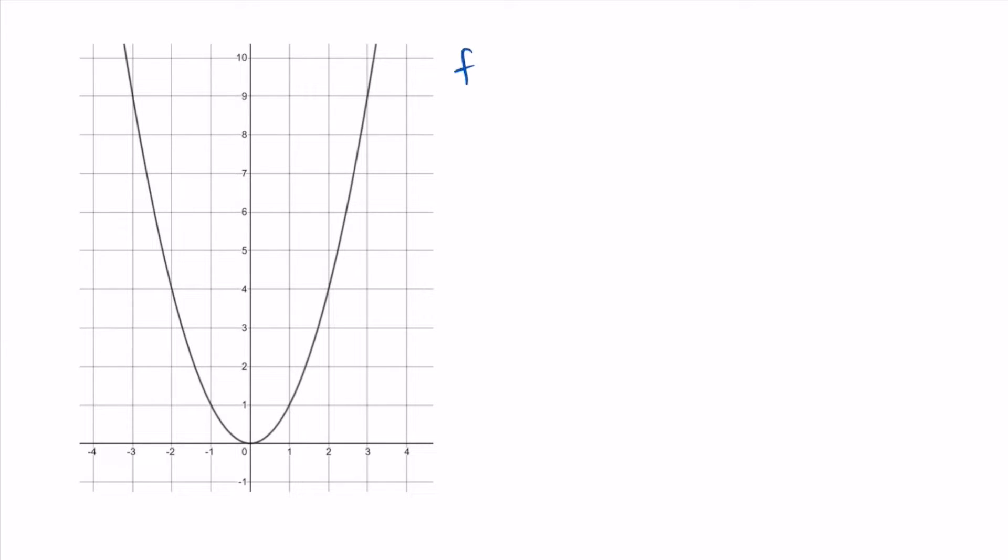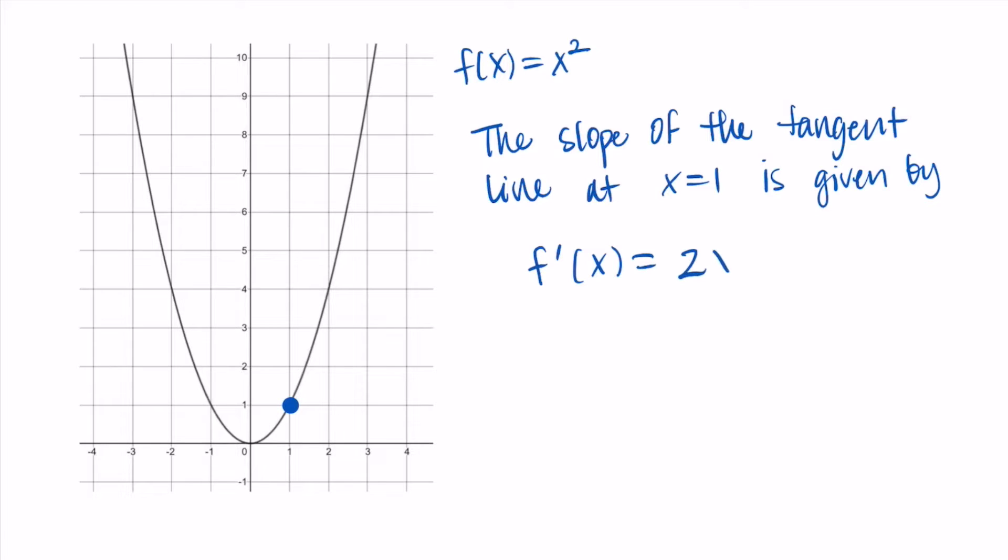Now we're going to return to our example of looking at the graph and trying to find the slope of the tangent line or the derivative at x equals 1. Now that we have the equation of the derivative, we know that the slope of the tangent line at x equals 1 is given by our derivative f prime of x equals 2x. We just need to replace x with 1, so the derivative at 1 is 2 times 1 which is 2.